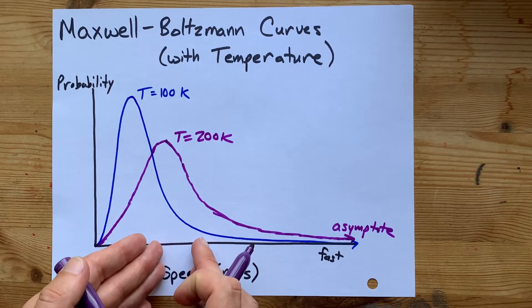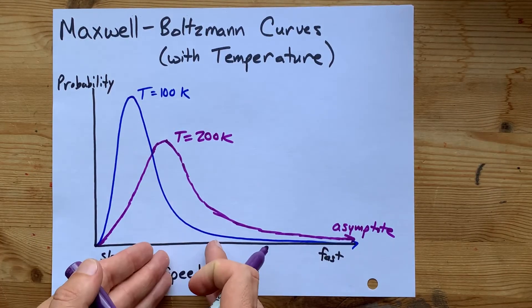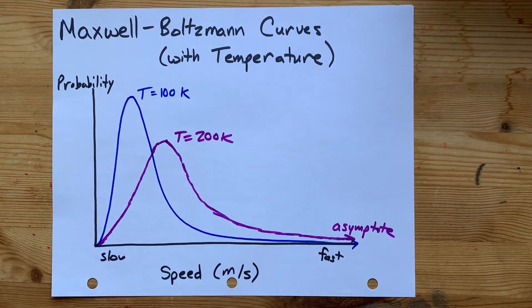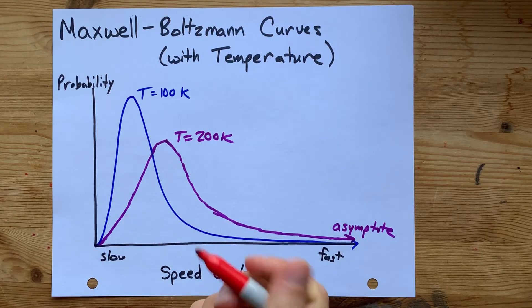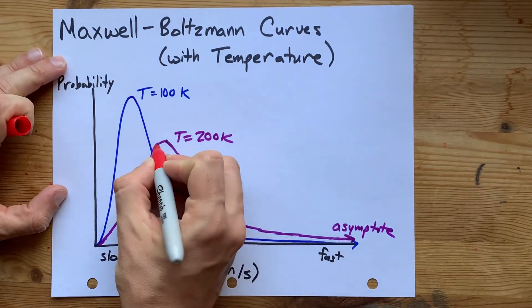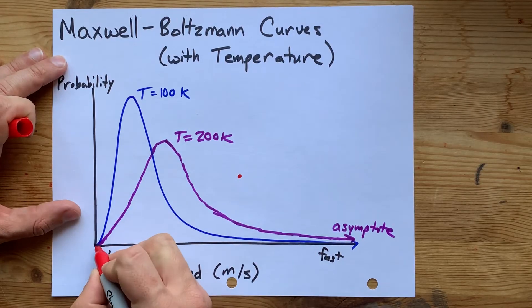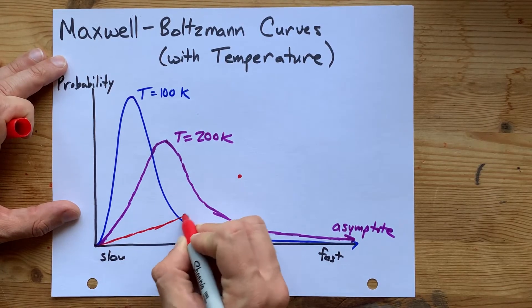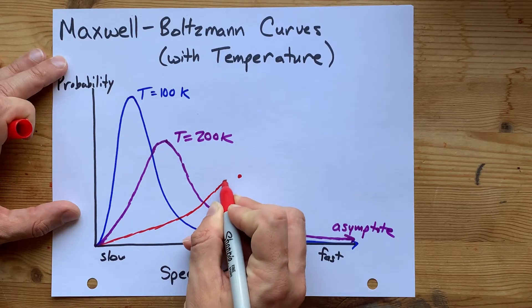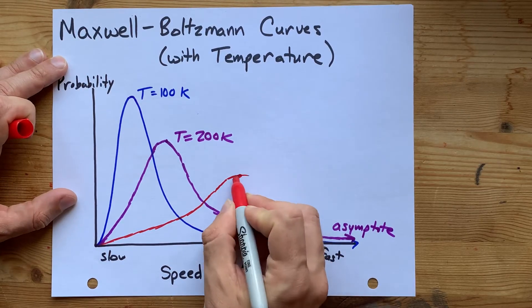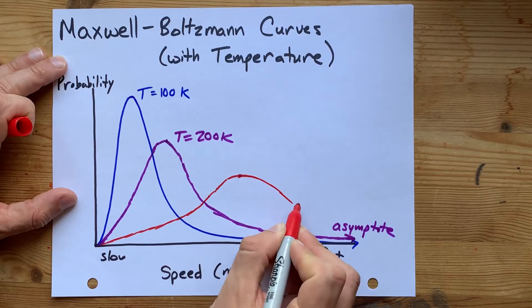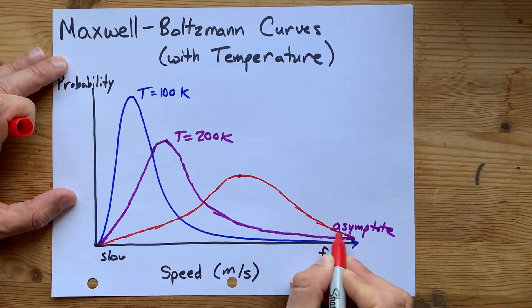And so it's more probable that more of them will be traveling at a higher speed. The peak is to the right. And then if we were to heat this up even more, we're going to move the peak of this curve maybe a little further to the right and down. Still start at 0, 0. You're still supposed to have what looks a bit like a hump graph here. And it peaks here and comes down. And you still have an asymptote.